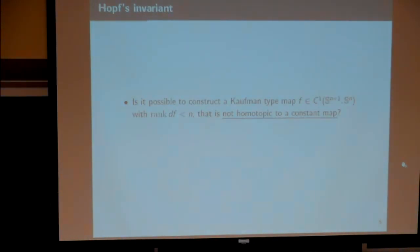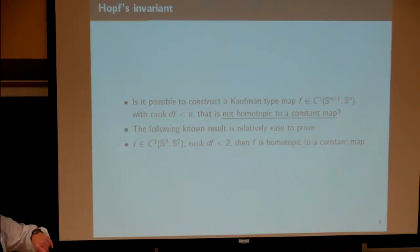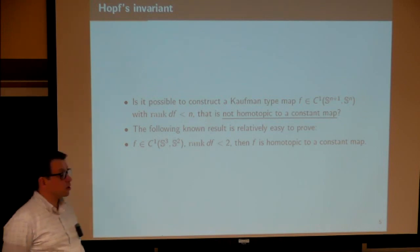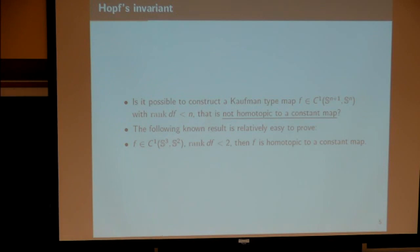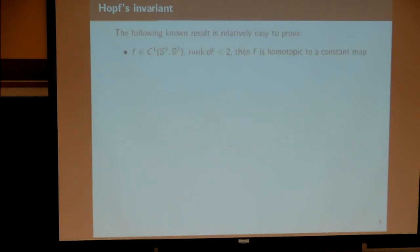So we need a new idea. The following result is relatively easy to prove: when n equals 2, for mappings from S³ to S² with rank of the derivative less than 2, the mapping must be homotopy trivial. The proof uses the Hopf invariant: a mapping from S³ to S² is homotopic to a constant map if and only if the Hopf invariant equals zero.